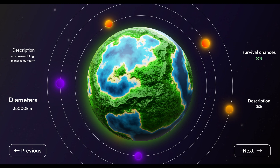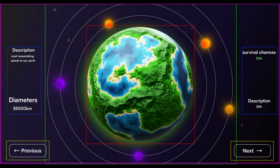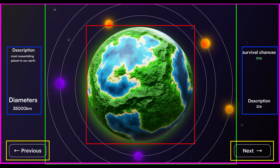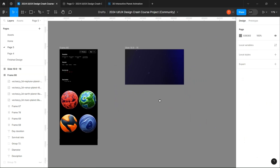Basically, this design is divided into five different sections, which are the background, the planets, the moons, the texts, and the buttons. We're gonna make everything step by step, so you can just check the chapters for each part.